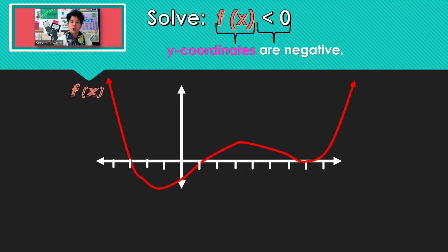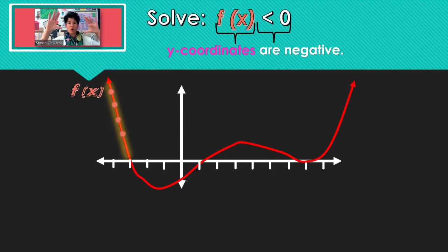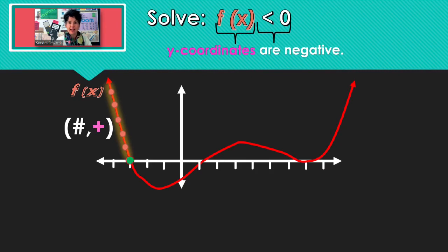Looking again from left to right: all of those points have positive y-coordinates, so we're not going to use that section. The x-intercept has a y-coordinate of 0, and we're only looking for negative, so we're not going to use negative 3.